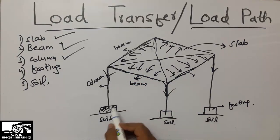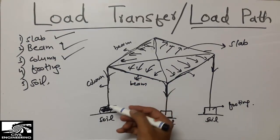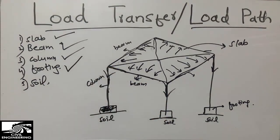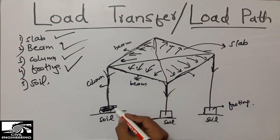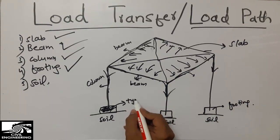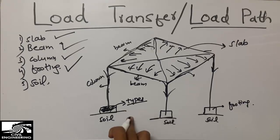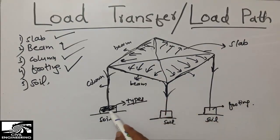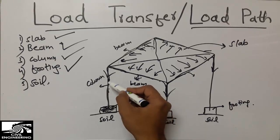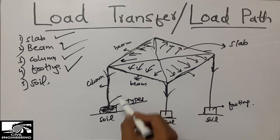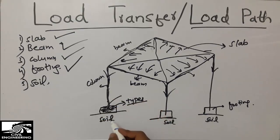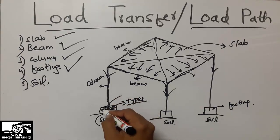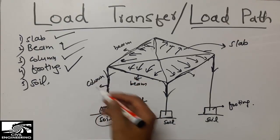After the load comes into the column, it is supported by the footing. We design the footing to support the column load — however much load is coming. The footing is the fourth component to support that load. We design different types of footing, as discussed in my previous videos, depending on the condition. In this case, I simply provided an isolated footing. After the load comes from the column into the footing, the footing takes the whole load, but it must also be compatible with the bearing capacity of the soil.